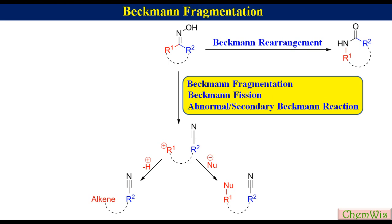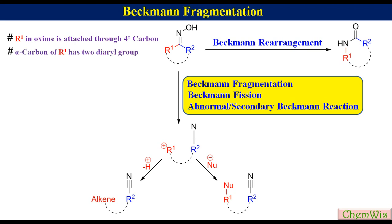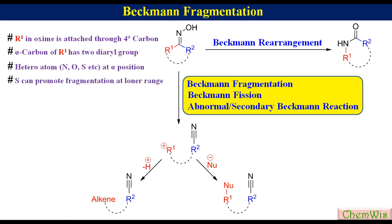In general, Beckman Fragmentation is favourable when R1 in the oxime is attached through a quaternary carbon, the alpha carbon of R1 has two diaryl groups, or there is a heteroatom at the alpha carbon. Sulfur can promote fragmentation even at a longer range.